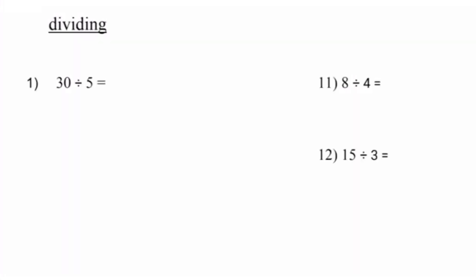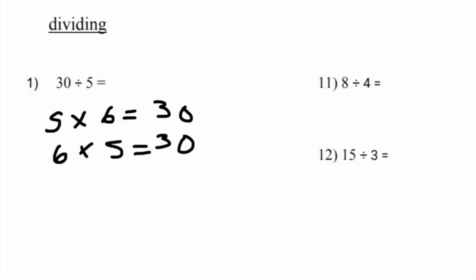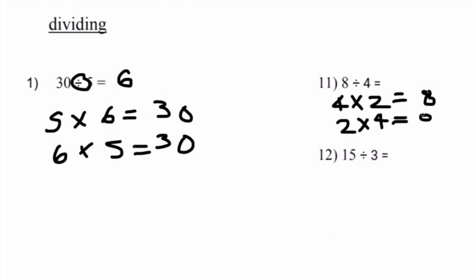Our second topic is division, and it's asking us to divide the numbers below. Number one, they give us 30 divided by 5. 30 divided by 5 can also be written in different ways. We know that 5 times 6 equals 30, and 6 times 5 equals 30. Therefore, 30 divided by 5 equals 6. Number 11, 8 divided by 4. We know that 4 times 2 equals 8, and 2 times 4 also equals 8. Therefore, 8 divided by 4 equals 2.